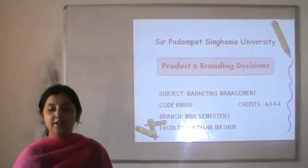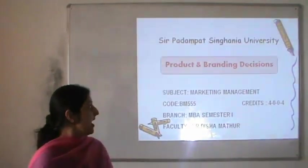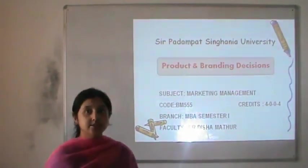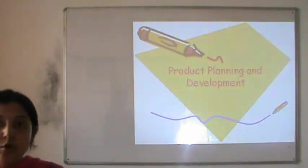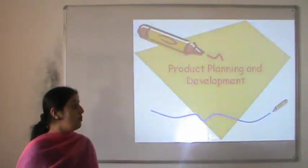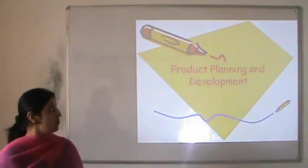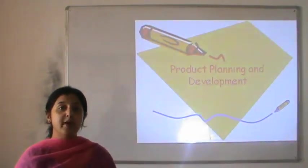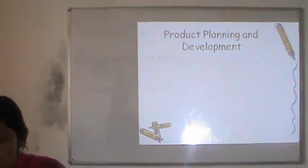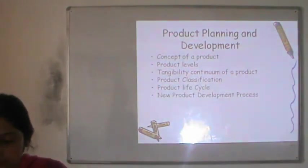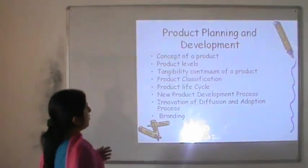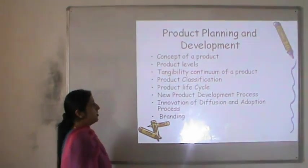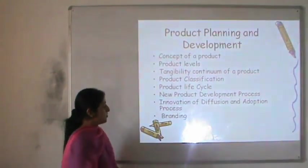This is the fourth lecture for the subject BM Triple 5, Marketing Management for NKS and MR.1 students. In today's lecture we are going to discuss two very important topics related to product and branding decisions. The slideshow shall progress in two major parts. We are going to discuss the makeup of the product, the various levels that the product passes through, the tangibility continuum, classification, product life cycle, new product development process, the innovation diffusion and adoption process, and branding decisions.